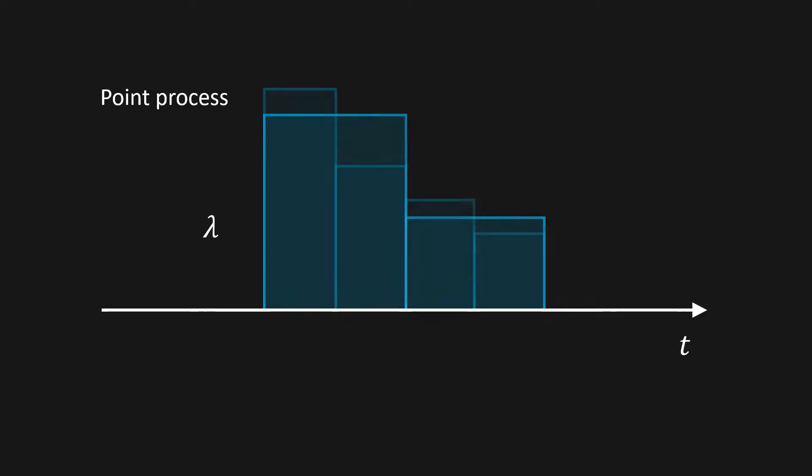We can continue to divide this until in the limit we get an intensity as a function of position. Now the expected number of points on this interval is equal to the area under the intensity curve.